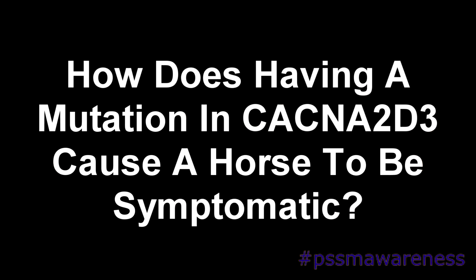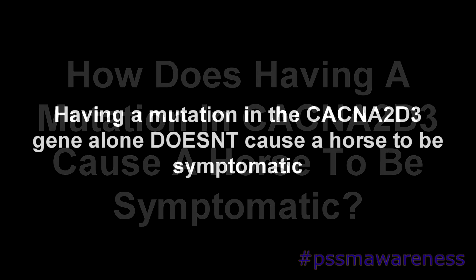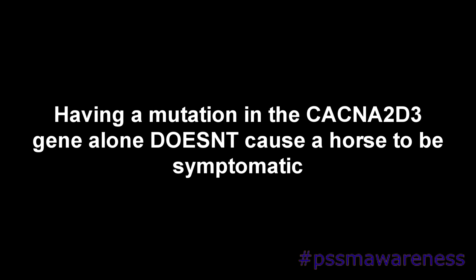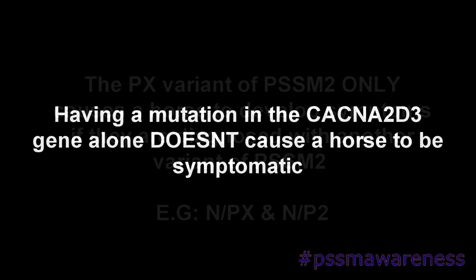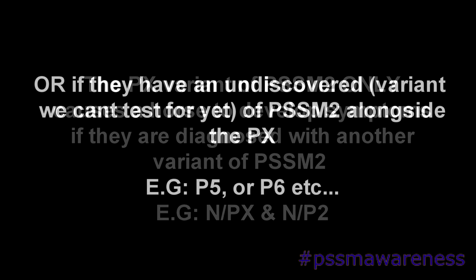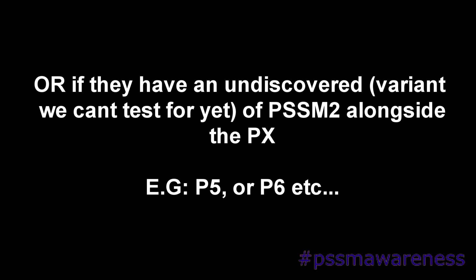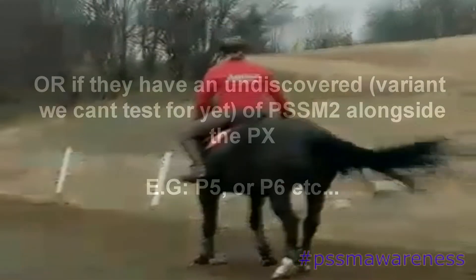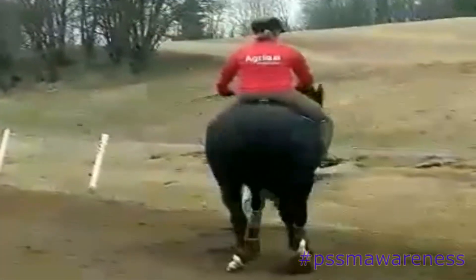How does having a mutation in CACNA2D3 cause a horse to be symptomatic? Having a mutation in the CACNA2D3 gene alone doesn't cause a horse to be symptomatic. The PX variant only causes a horse to develop symptoms if they are diagnosed with another variant of PSSM2 — for example, MPX and MP2 — or if they have an undiscovered variant of PSSM2 alongside the PX. This is why some MPX and PXPX horses are highly symptomatic.